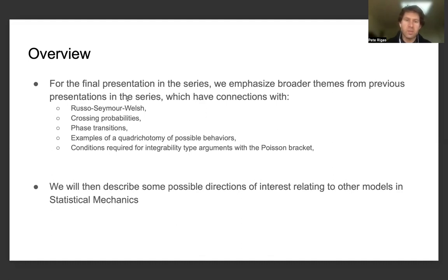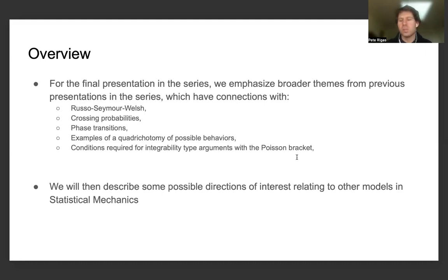From this final presentation in the series, we're going to emphasize broader themes from the previous ones, which have connections with Russo-Seymour-Walsh crossing probabilities, phase transitions, examples of a quadrichotomy of possible behaviors, as well as conditions for integrability-type arguments which ultimately revolve around computations with the Poisson bracket. We will then describe some possible directions of interest relating to other models in statistical mechanics.